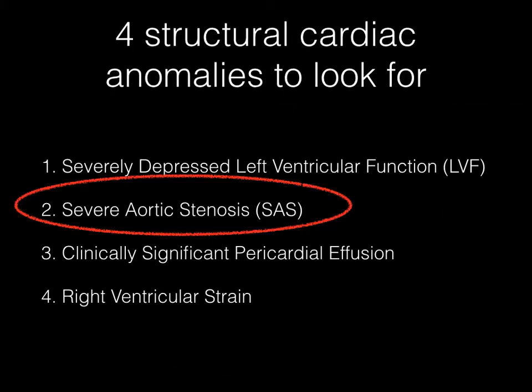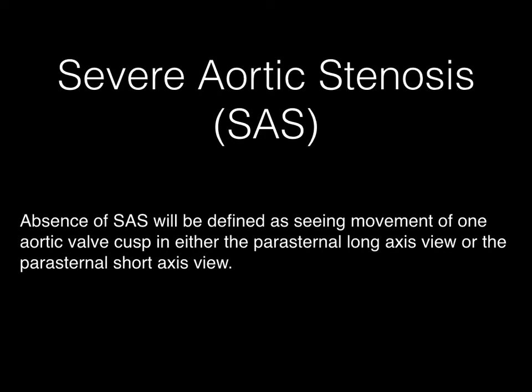The second cardiac structural anomaly we want to look for is severe aortic stenosis. Absence of severe aortic stenosis will be defined as seeing movement of one aortic valve cusp in either the parasternal long axis view or the parasternal short axis view.